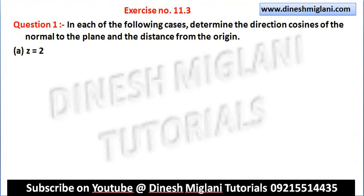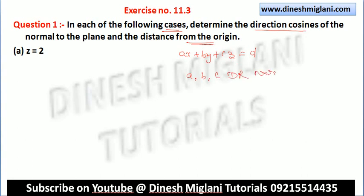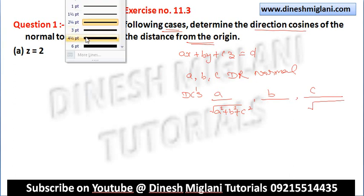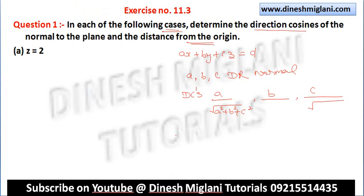The first question is: in each of the following cases, determine the direction cosines of the normal to the plane as well as the distance from origin. We know that if equation of plane is Ax + By + Cz = D, then A, B, C are the direction ratios of the normal to the plane. The direction cosines are A/√(A²+B²+C²), B/√(A²+B²+C²), and C/√(A²+B²+C²). The distance from origin is D/√(A²+B²+C²).